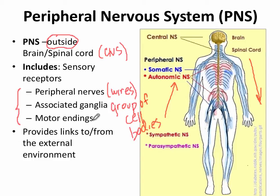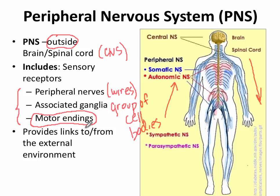Finally, we're going to be talking about the motor endings. Recall from Chapter 9 on skeletal muscle physiology that a motor ending in skeletal muscle would be the neuromuscular junction — something you've already learned about.